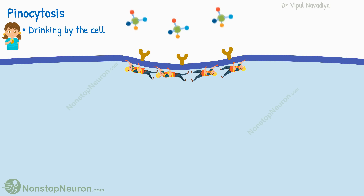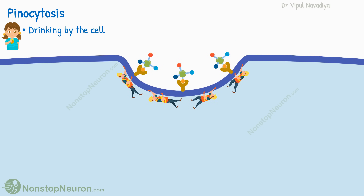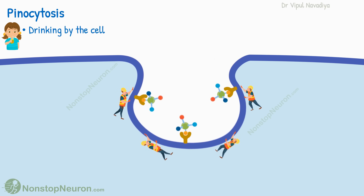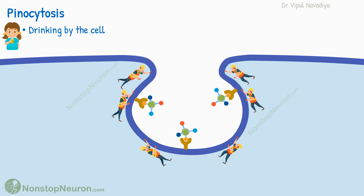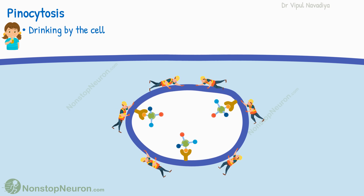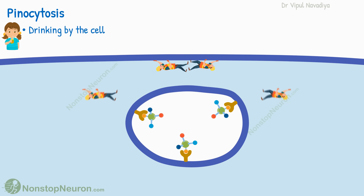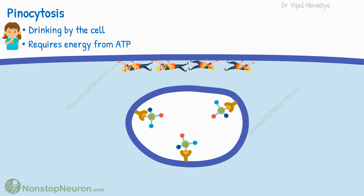What happens is, when the particle attaches to the receptor on the outer side of the cell, these proteins pull the membrane inside the cell. This deepens the pit. Then they close the mouth of this pit, forming a vesicle inside the cell. Then these proteins dissociate from the vesicle and go back to the membrane for the next round of endocytosis. The entire process requires energy from ATP.